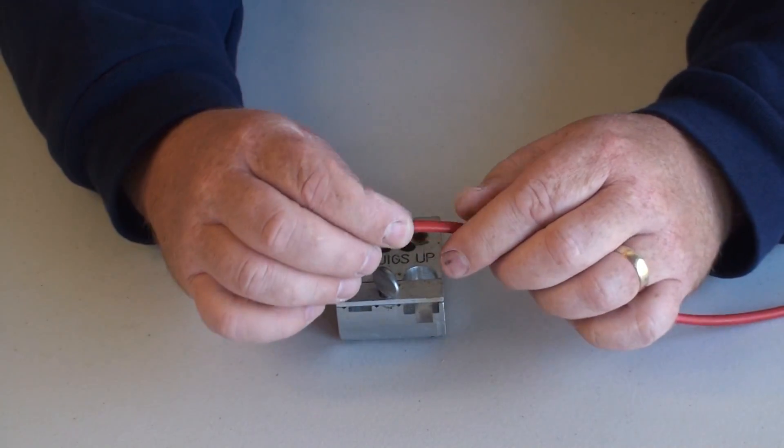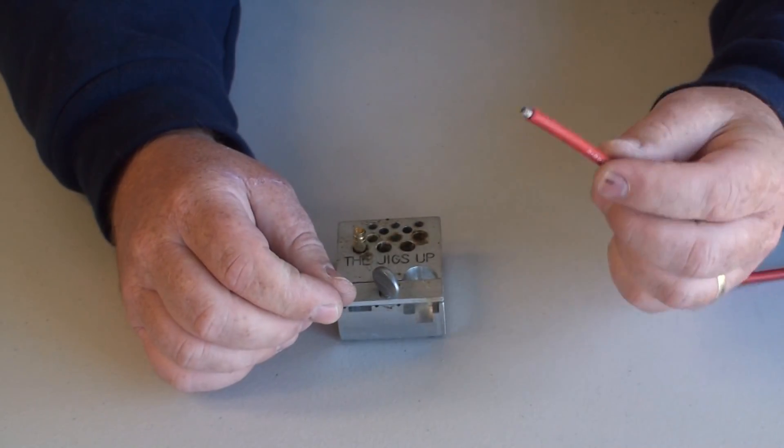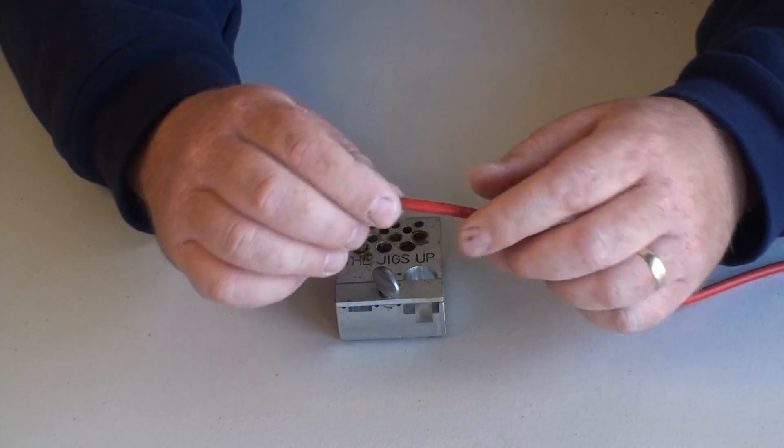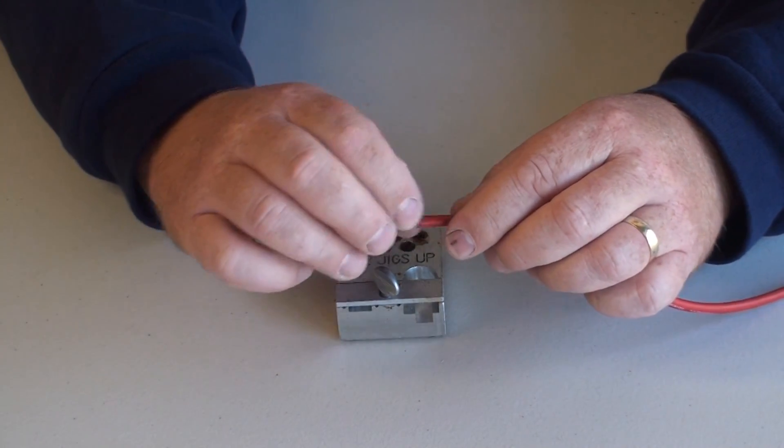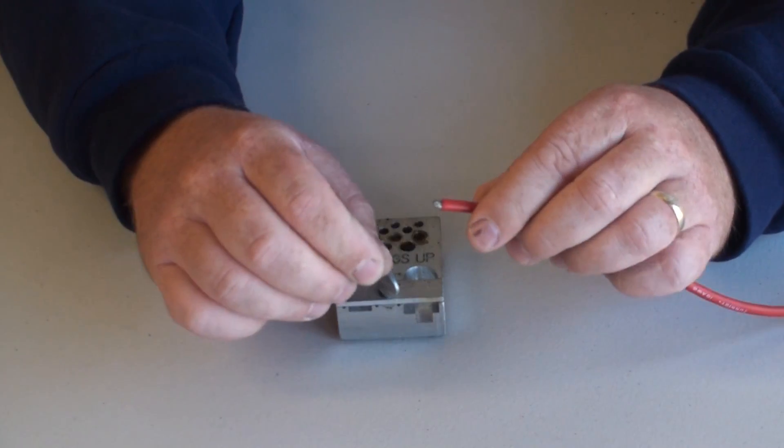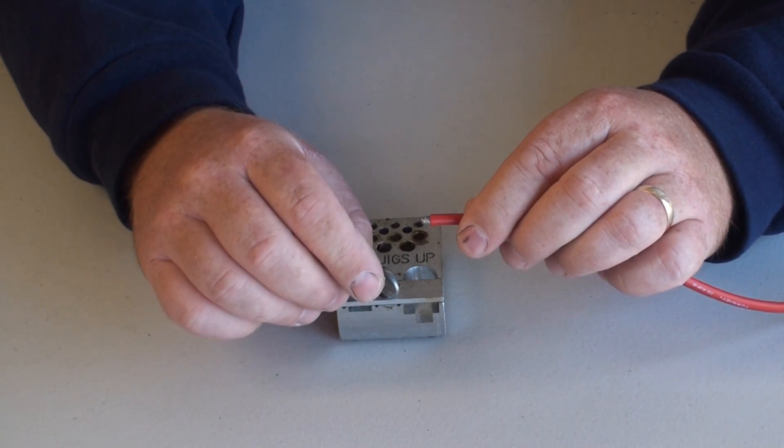With the battery lead, and again, pretend this is attached to your battery, cut off about four or five millimeters of the silicon insulation and expose the wire beneath.